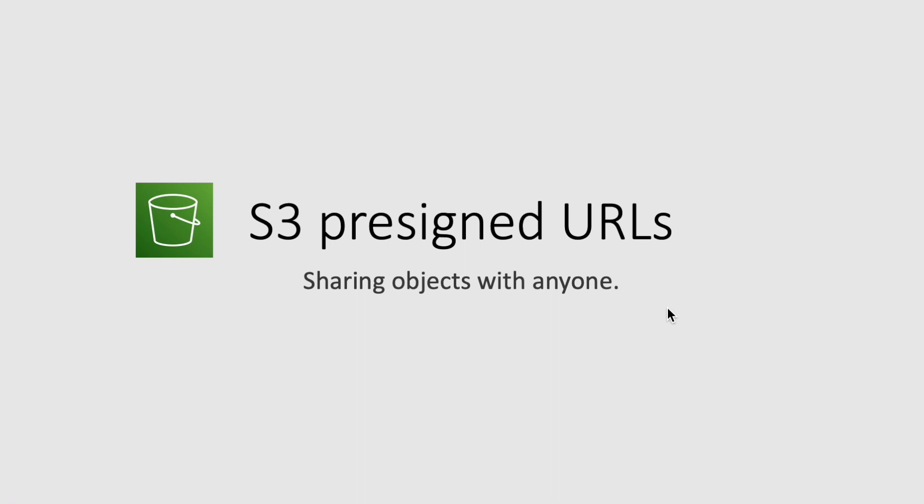When you create an S3 bucket in AWS it is private by default, unless you add a bucket policy and open it to the world, which is not recommended by AWS. But sometimes you need to share files like images and videos in these private S3 buckets with your customers or users who do not have AWS security credentials or permissions. That's where S3 pre-signed URLs come in handy.